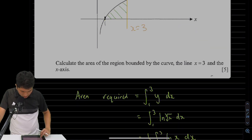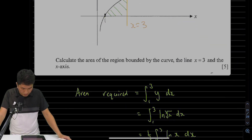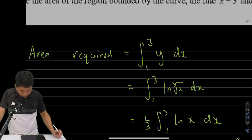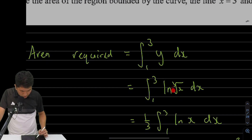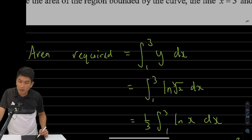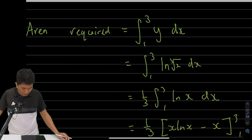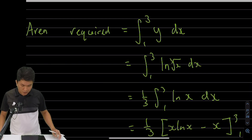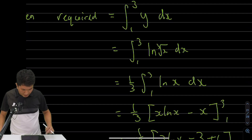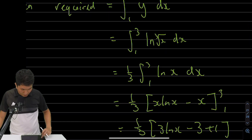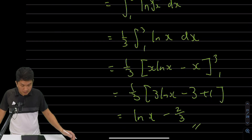So we integrate y dx from 1 to 3 — that is, integrate natural log of the cube root of x. With a bit of manipulation: cube root of x is x to the power of one-third, so I can move the one-third out of the integral. Then we integrate natural log of x from 1 to 3. Integrating natural log of x gives x·ln(x) minus x. Evaluating that from 1 to 3 gives us the answer.